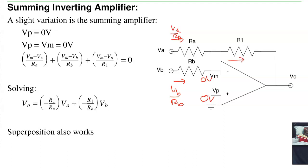Those currents have no place to go. They have to go through R1. So that current is VA over RA plus VB over RB. That's your summing.